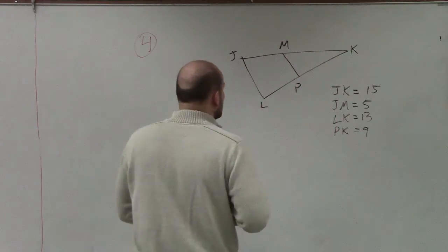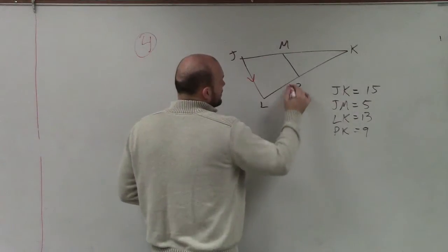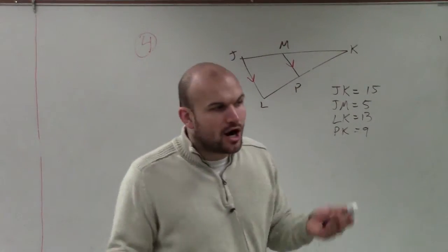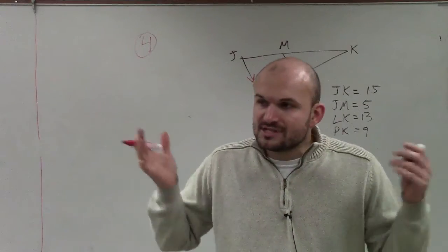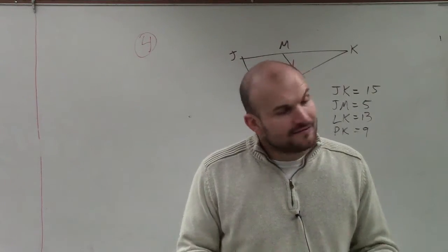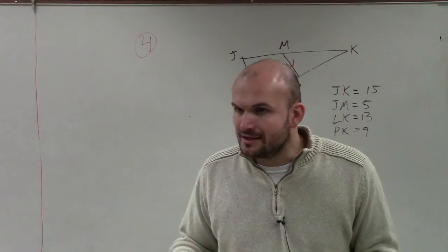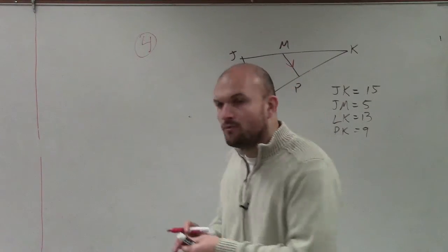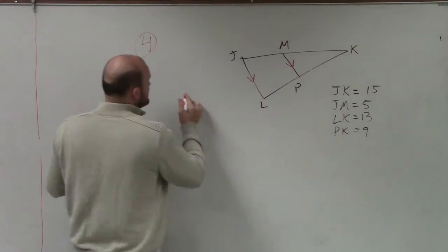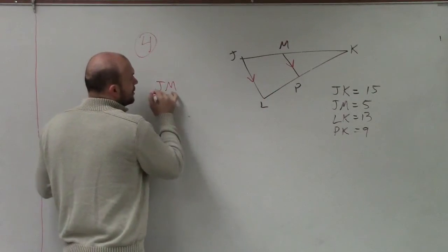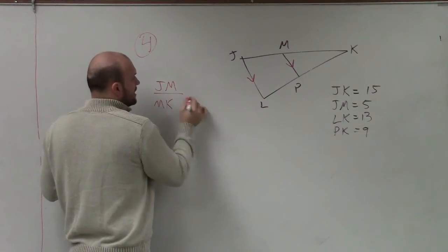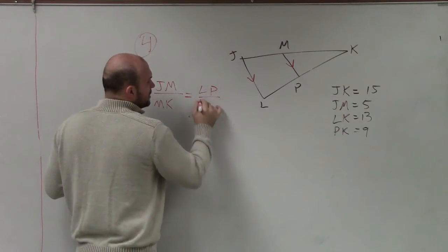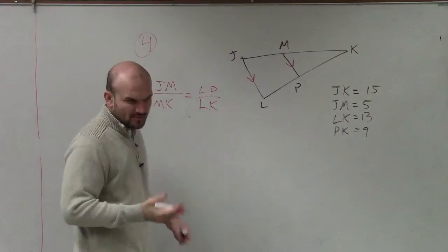So again, what we're trying to prove is JL parallel to MP. Now, if you guys remember, in the first set of notes we said if you have a triangle and a parallel line, then we have proportionality. And what we stated was that JM over MK is proportional to LP over LK. Do you guys remember that?